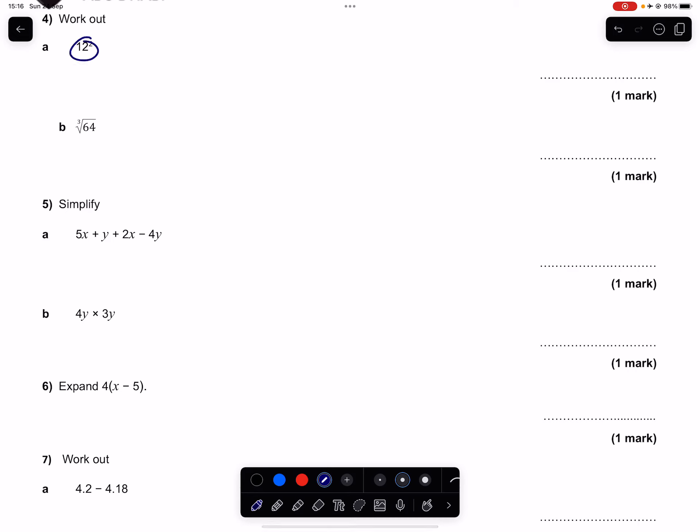Question 4. Work out 12 squared. 12 squared is 12 times 12 and using the grid method I'm going to split each 12 up into a 10 and a 2 and multiply each of these together.